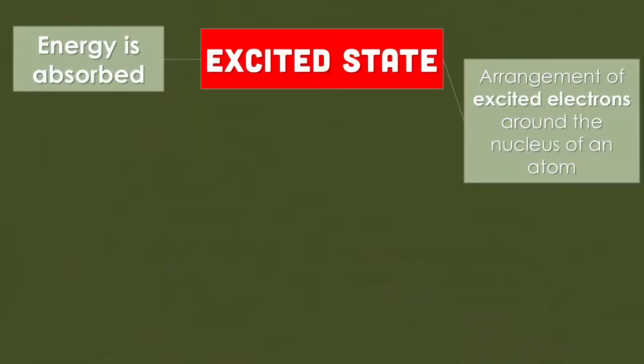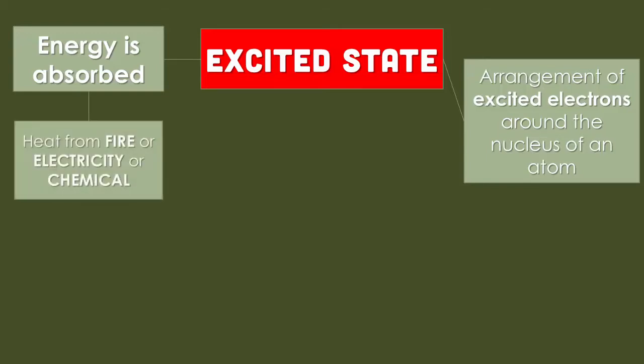Excited state is when energy is absorbed by those electrons, and the arrangement of the excited state is around the nucleus of an atom, but in a different manner than the ground state. So the way that electrons can absorb this energy is through fire, through electricity, or even through a chemical reaction.